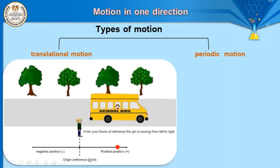Translational motion: as you see in the figure, there is a school bus, some trees, and a person. The car is in motion — the school bus is in motion, but the person is at rest. The school bus passes by this person, so this person is called the reference point. The school bus changes its position from starting point to ending point. So translational motion is the motion of an object from starting point to ending point relative to a reference point.